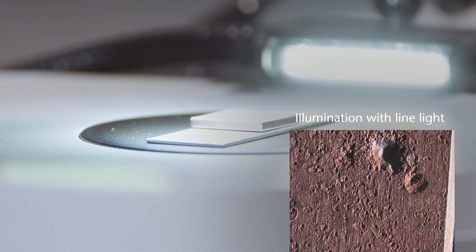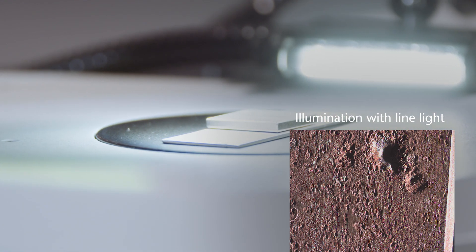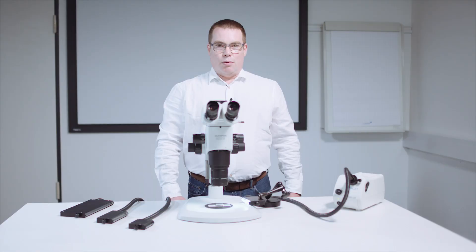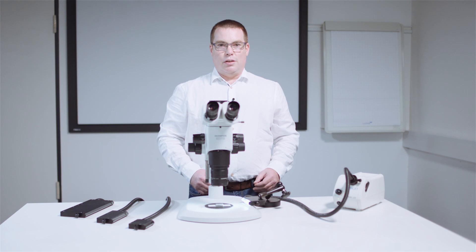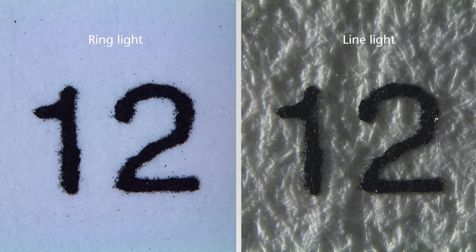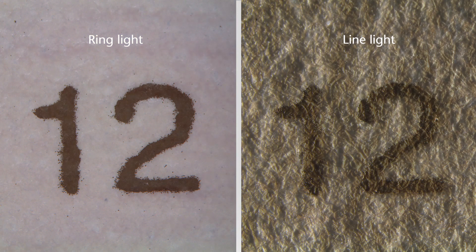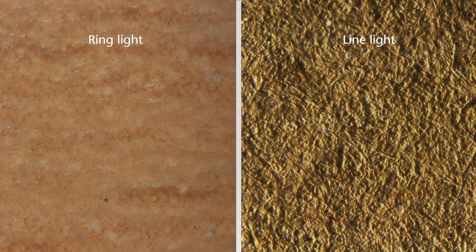This results in a plastic 3D effect. Typical areas of application for line light include structured surfaces on flat materials, such as paper, structured laminate films, or textiles.